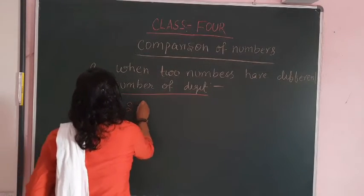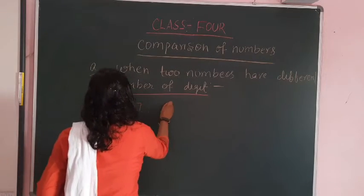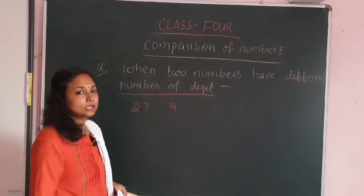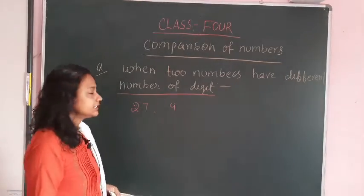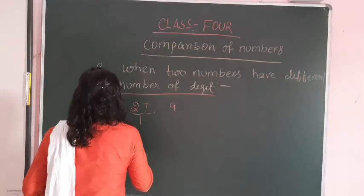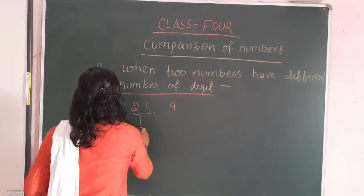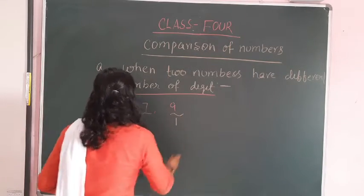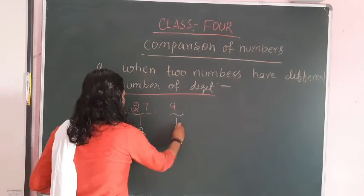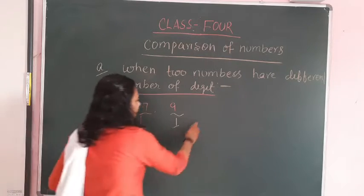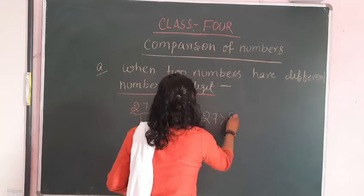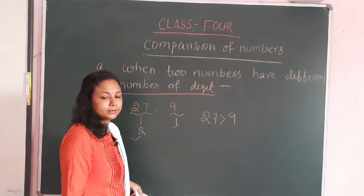If you take 27 and 9, which one is greater? Here, 27 has two digits and 9 has one digit. Two is greater than one, so 27 is greater than 9.